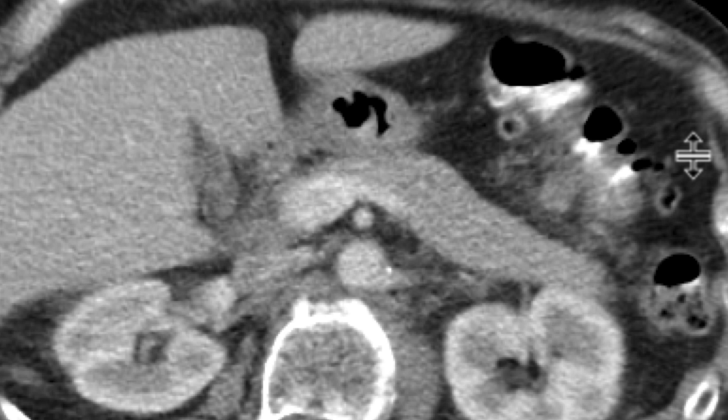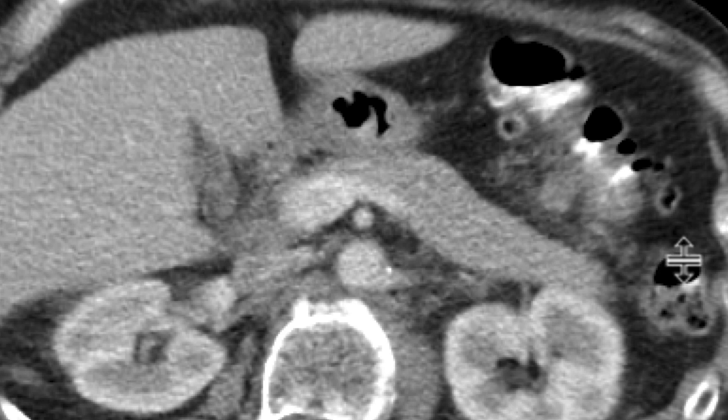Typically we see this in the sigmoid colon in patients with left lower quadrant pain. But we can see it anywhere there's a diverticula within the large or small bowel. In this case, this was in the distal transverse colon — a case of uncomplicated acute diverticulitis.